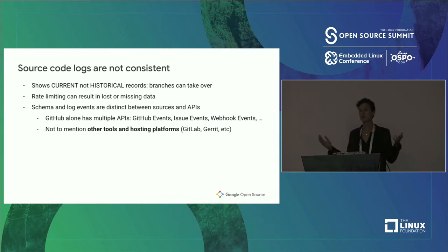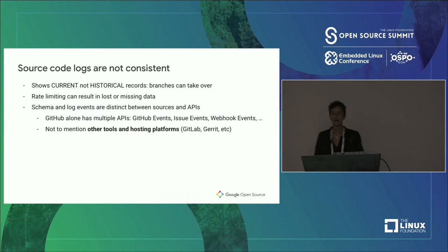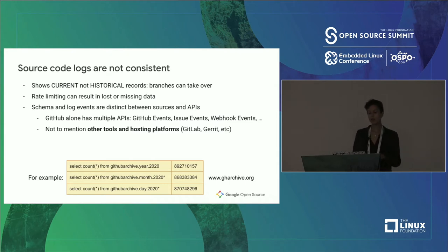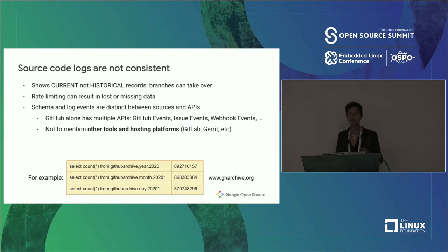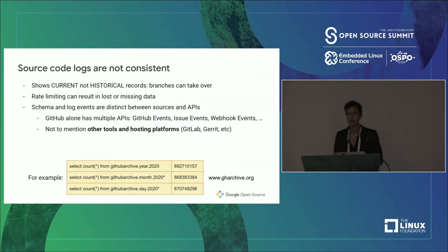Schemas and logs can have different sets of things they're measuring. GitHub alone has multiple API types — the event stream, issue stream — not to mention other tools like Gerrit data, which mostly focuses on changes, reviews, and change logs, while GitHub has an issue stream covering bugs, triaging, and comments. A simple query I ran on GitHub Archive — a comprehensive collection of the GitHub event stream — showed tables over the same time period producing different row counts, so we know something is missing.